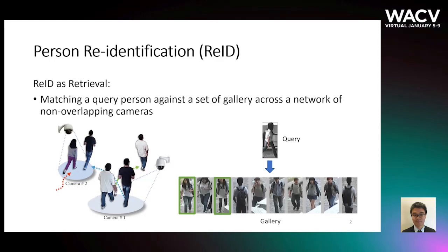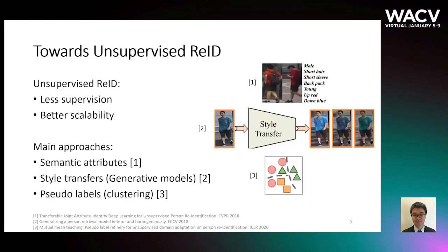Annotating cross-camera identity labels is a cumbersome task. Unsupervised re-ID needs less human supervision and has better scalability in real-world deployment. There are three main approaches: semantic attribute methods, style transfer, and pseudo label-based methods.